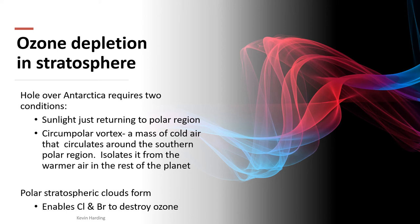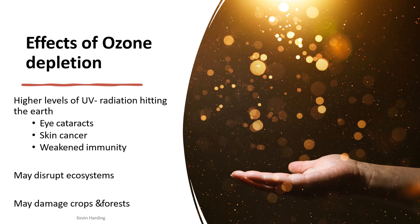Because the poles experience six months of total darkness in winter, when sunlight returns it enables chlorine and bromine molecules to destroy the ozone. This explains why the ozone hole appears over the polar region. Higher UV levels from the ozone hole cause cataracts, skin cancer, weakened immunity, and can destroy crops and forests.